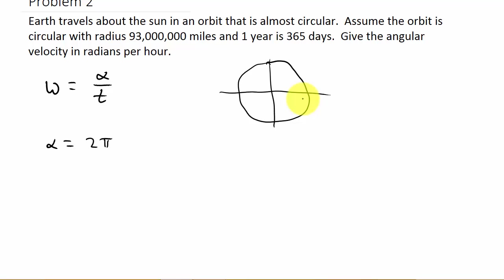Yes, yes, you could say one year, that's fine too. If we look at it in days, then that tells us that 2 pi, it makes this angle in what amount of time? 365 days. So the angular velocity is 2 pi over 365.